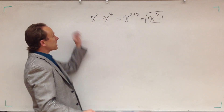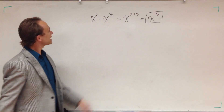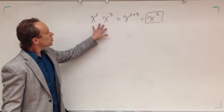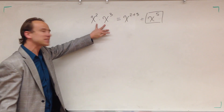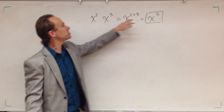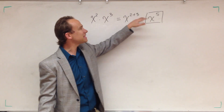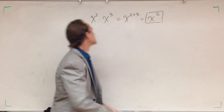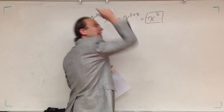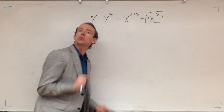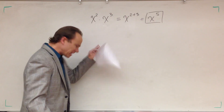So when we've got variables that have exponents, what you do — assuming the variable is the same — is you just add the exponents. When you're multiplying the variables, you add the exponents. That's what we do.